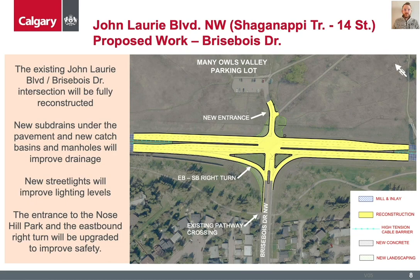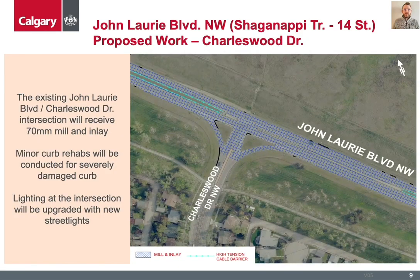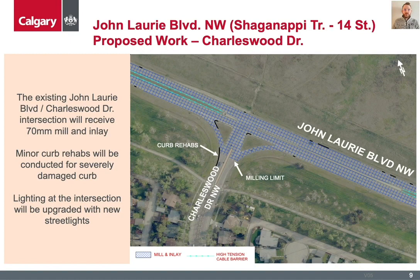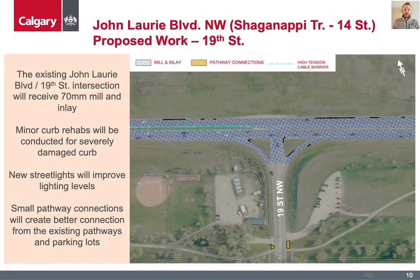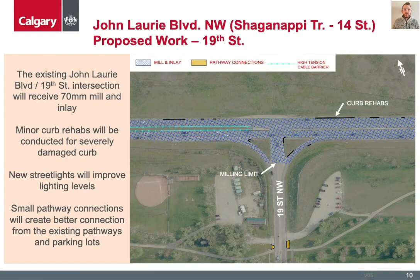High-tension cable barriers will be installed both west of the intersection towards Brenner Drive and east towards Charleswood Drive. Rehab of the Charleswood Drive and John Lurie Boulevard intersection will be completed through mill and inlay at the intersection to the south limit shown on the image, as well as the removal and replacement of severely damaged curb and gutter within the intersection. The intersection will also receive upgraded lighting to improve the lighting levels and the safety of the intersection. High-tension cable barriers will be installed west towards Brisewa Drive and east towards 19th Street. Rehab of the 19th Street and John Lurie Boulevard intersection will be completed through mill and inlay at the intersection to the south limit shown on the image, and the removal and replacement of severely damaged curb and gutter. The intersection will also receive upgraded lighting to improve the lighting levels and safety of the intersection.